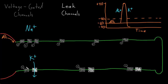The second type of channel that allows potassium to exit are voltage-gated potassium channels. These also open when the membrane potential crosses the threshold, but they're a little slower to open than the voltage-gated sodium channels. So first, all the voltage-gated sodium channels snap open, allowing sodium to rush in and causing the rising phase of the action potential. Then, a little slower, the voltage-gated potassium channels open, allowing potassium to flow out of the neuron, contributing to the falling phase of the action potential.